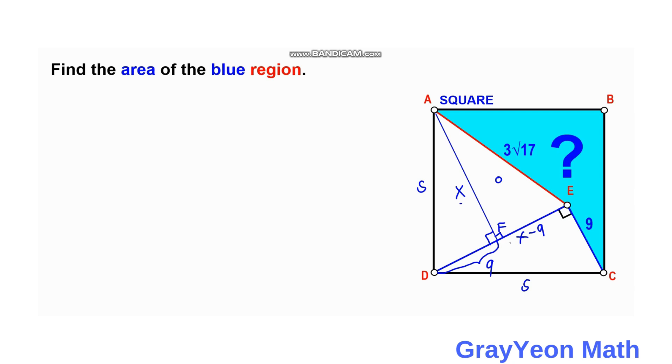So we have X squared plus (X minus 9) squared is equal to (3 square root 17) squared. So X squared plus X squared minus 18X plus 81 is equal to 9 times 17, which is 153.